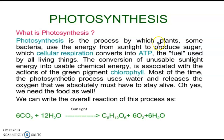Photosynthesis is a process by which plants and some bacteria use the energy from sunlight to produce sugar, which cellular respiration converts into ATP — the fuel used by living things. ATP is a fuel which gives energy. The conversion of unusable sunlight energy into usable chemical energy is associated with the action of the green pigment chlorophyll. Chlorophyll converts solar energy into chemical energy.